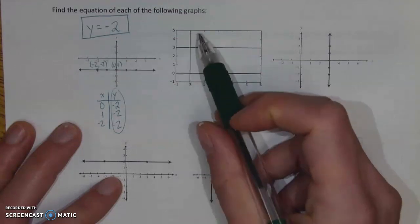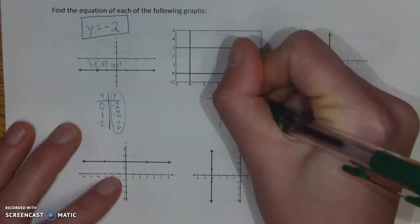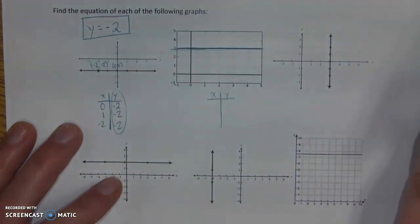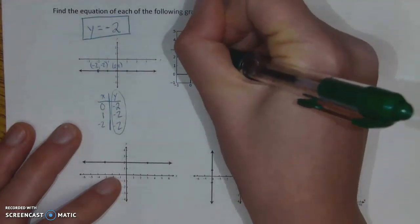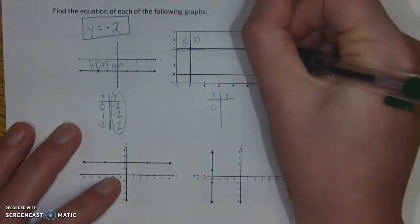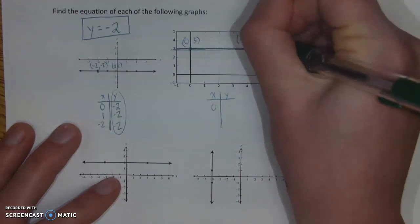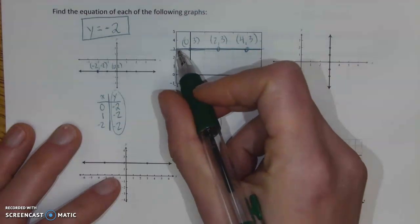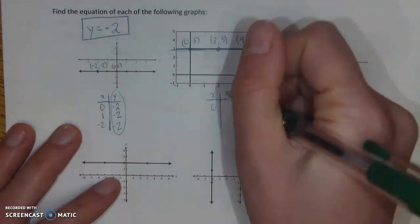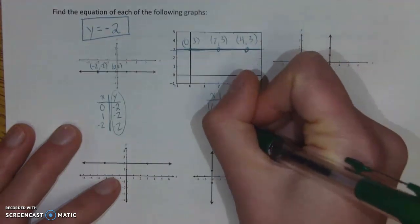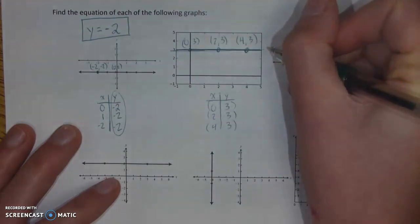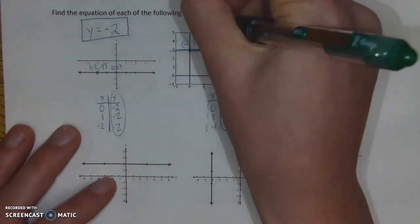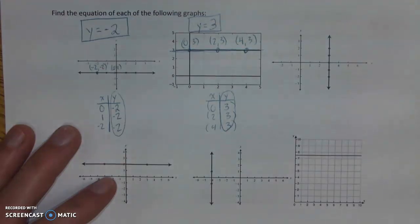This next one has the same sort of pattern. Let's find a few points using a t-chart. When x is 0, y is 3. Another point on the line is 4, 3. Another is 2, 3 — I'm 2 over and 3 up. If I make a t-chart with those points, no matter what, y equals 3. So the equation is y equals positive 3.